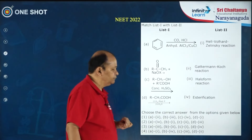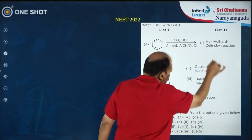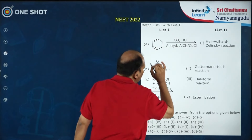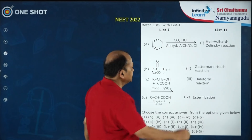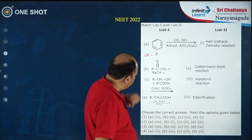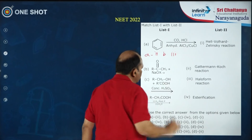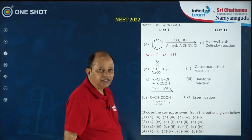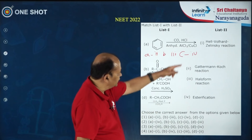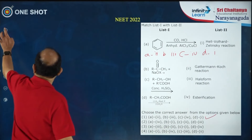Another question based on different reagents asked in NEET 2022 — a match-the-column type: benzene + CO/HCl gives benzaldehyde (Gattermann–Koch formylation), so A matches 1. Methyl ketone reacting with sodium hypohalite is the haloform reaction, so B matches 3. Alcohol plus acid is esterification, so C matches 4. Carboxylic acid with halogen and red phosphorus is the HVZ reaction, so D matches 1. The first option overall is correct.